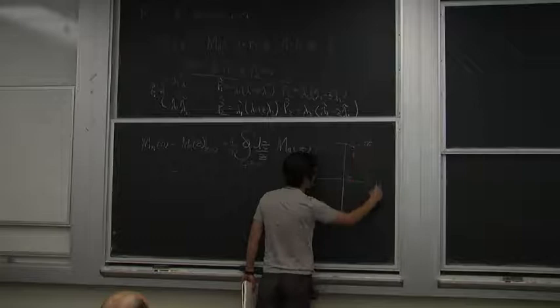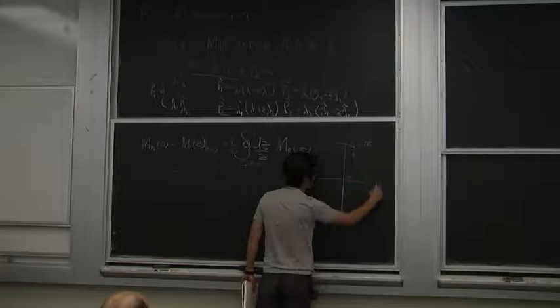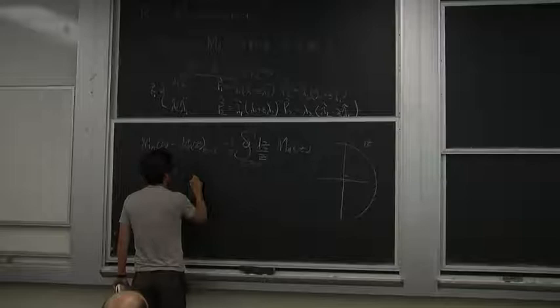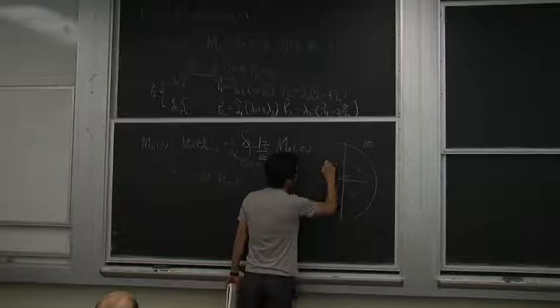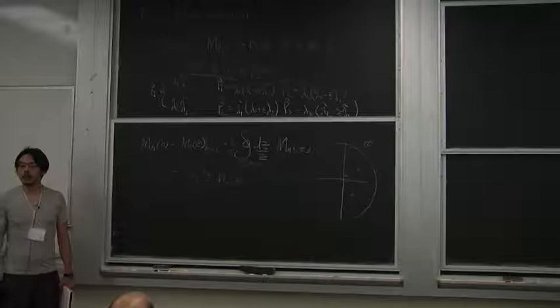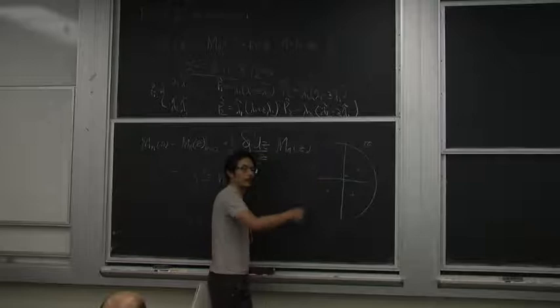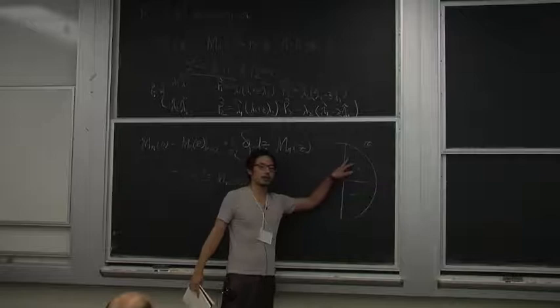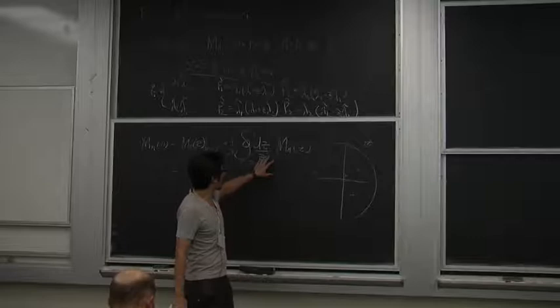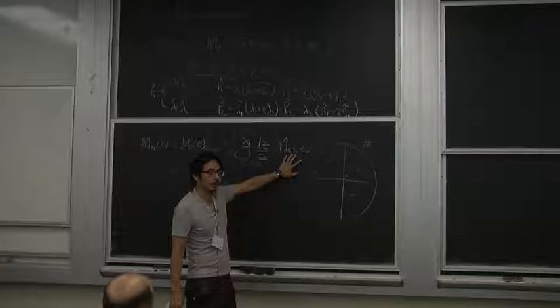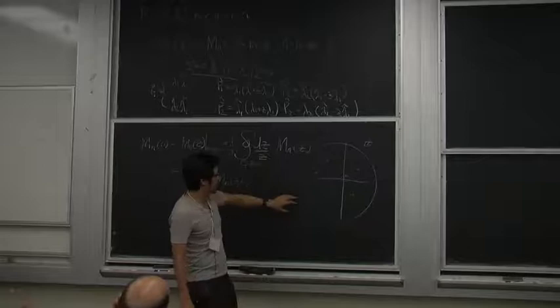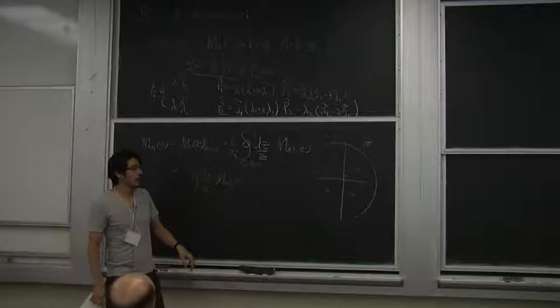Now we perform a contour deformation and deform this into the contour that encircles infinity. The contour over infinity picks up all possible poles at the finite region in your complex plane, plus possible contributions from infinity. We'll forget about contributions from infinity for now, and focus on what is contributing to these finite poles. The poles come either from the 1/Z factor, or from whatever poles appear in your function M_N(Z).